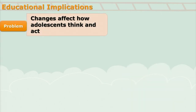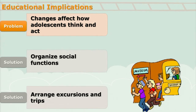As there are so many changes which take place among adolescents, those changes affect the way they think and act, and if not taken care of properly, they can lead to problems. It is a joint responsibility of parents and teachers to organize social functions where teenagers get oriented to the norms of society — how they should behave — and they get accustomed to those things.